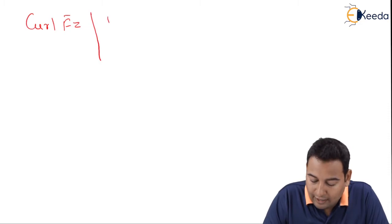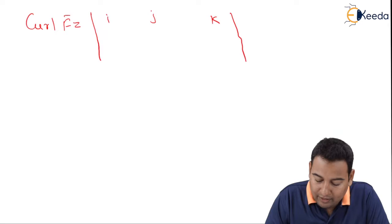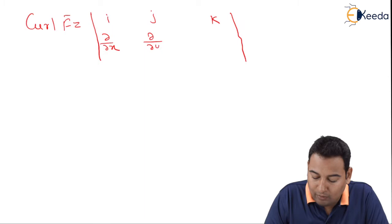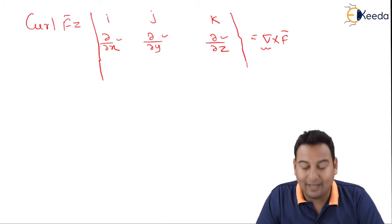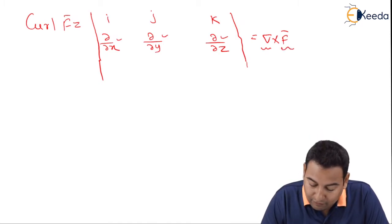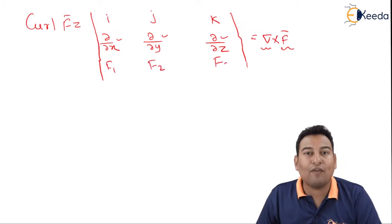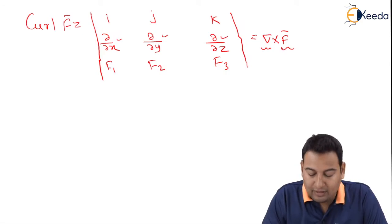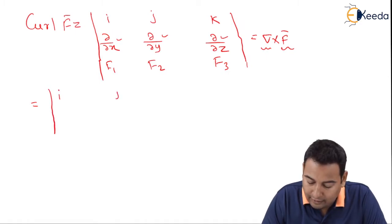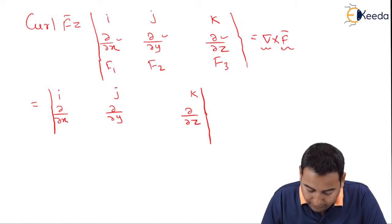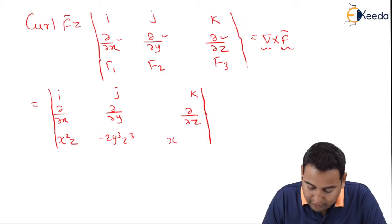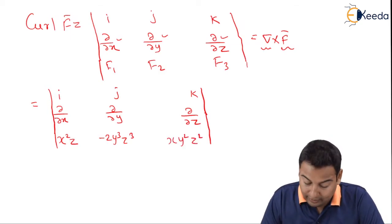Curl of f̄ — we have already discussed this formula. Curl of f̄ is del cross f̄, which is a determinant with i, j, k in the first row; ∂/∂x, ∂/∂y, ∂/∂z in the second row; and f1, f2, f3 in the third row. Let me put the values: f1 = x²z, f2 = −2y³z³, f3 = xy²z².